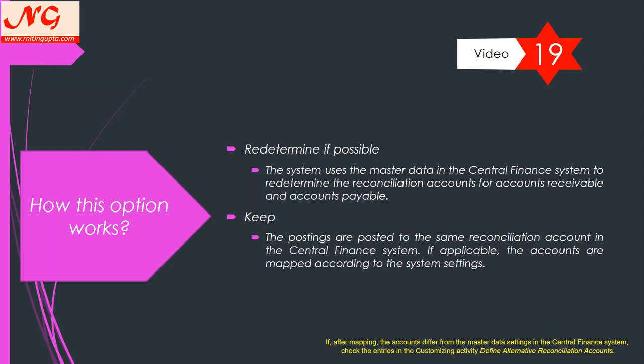'Keep' means it will only post to what is coming from the mapping. With 'Redetermine,' it can redetermine the GL account — for example, if you map vendor to vendor but you want a different reconciliation account, it will determine that from the CFIN master data of the vendor. An important note: if after mapping the account differs from the master data setting in the Central Finance system, check the entries in the customizing activity 'Define Alternative Reconciliation Account,' as that configuration may impact the action defined above.